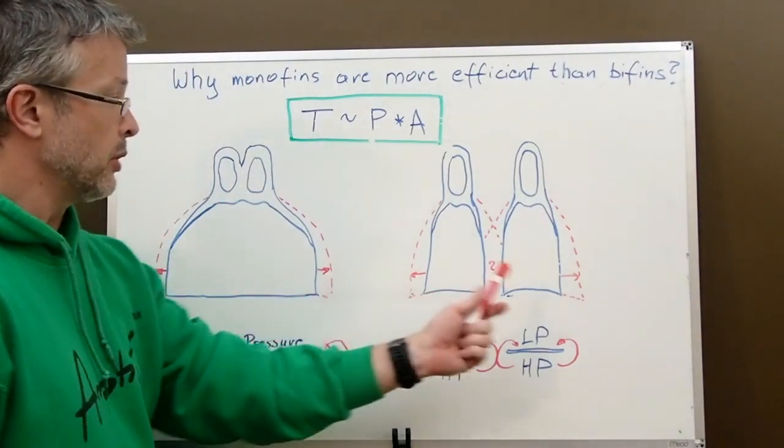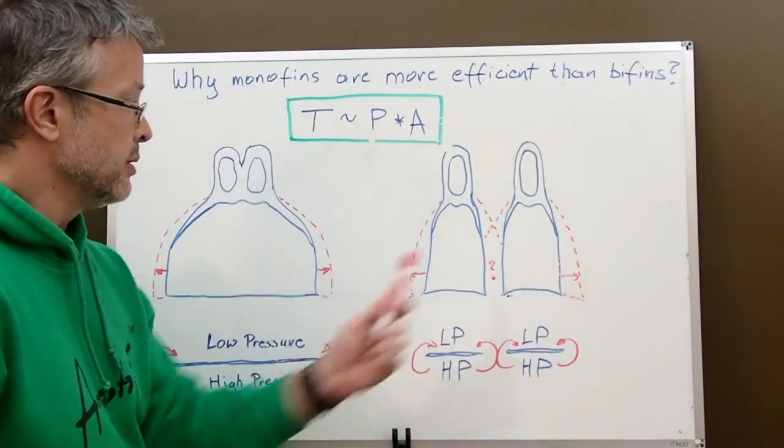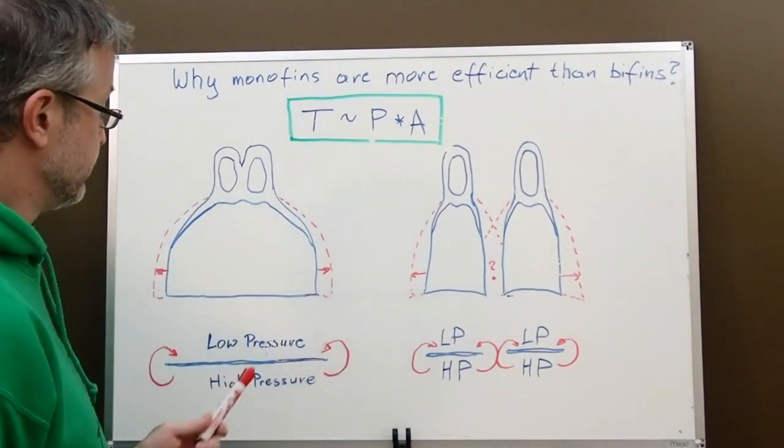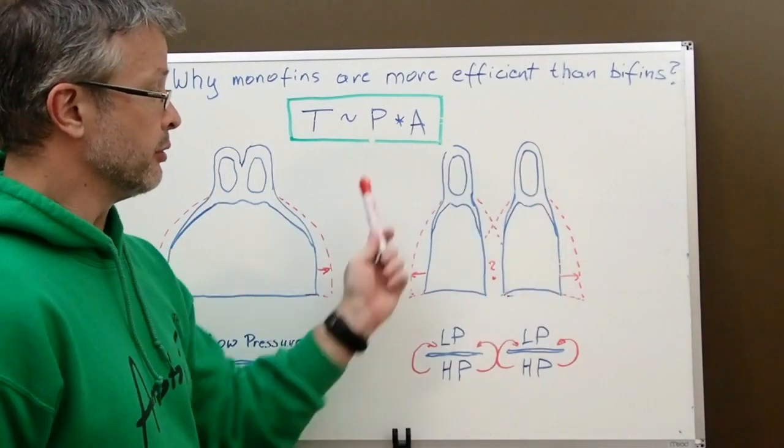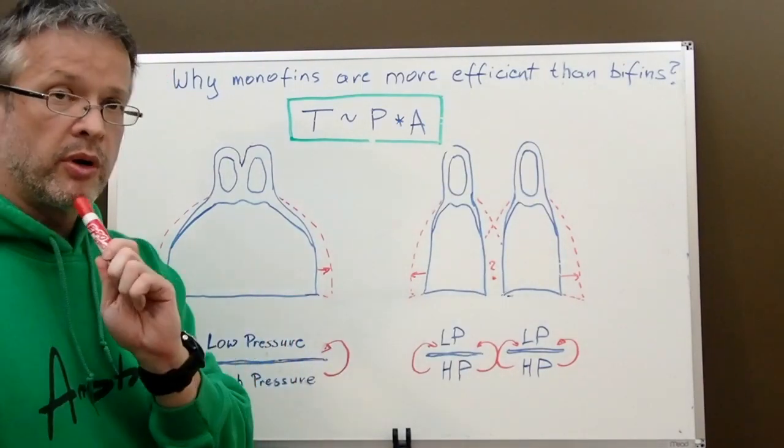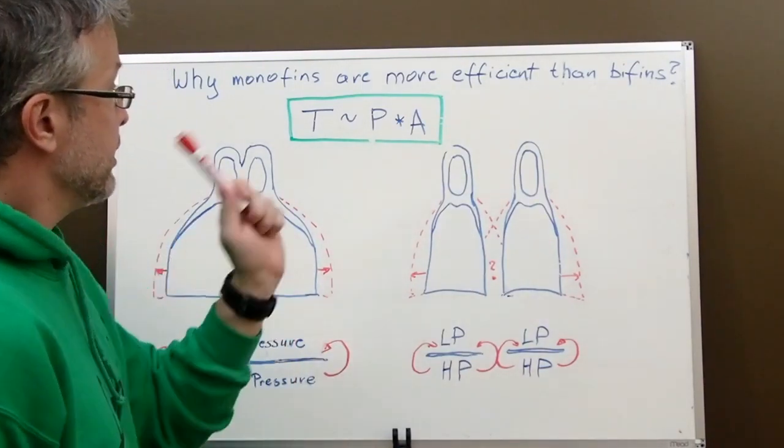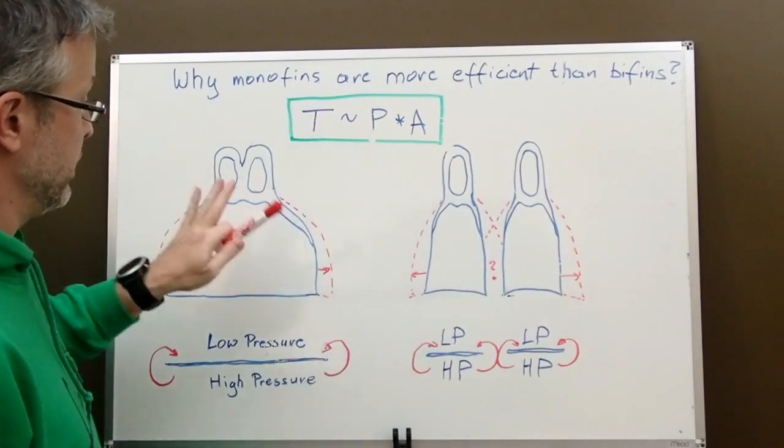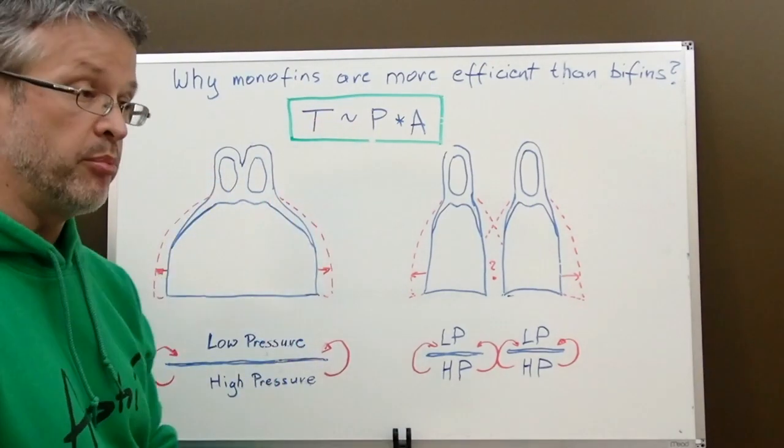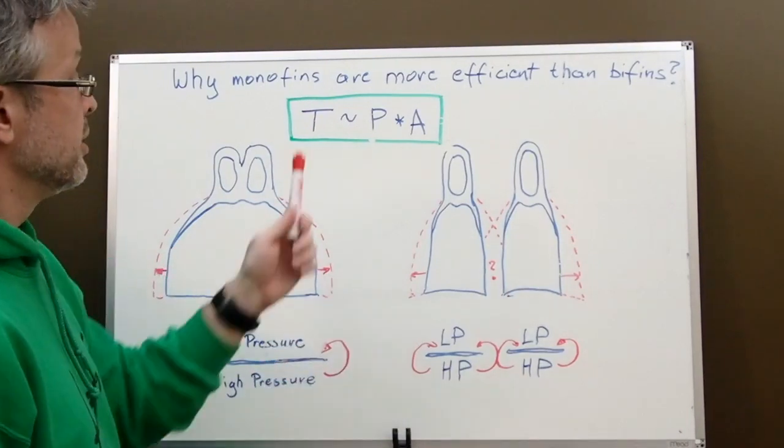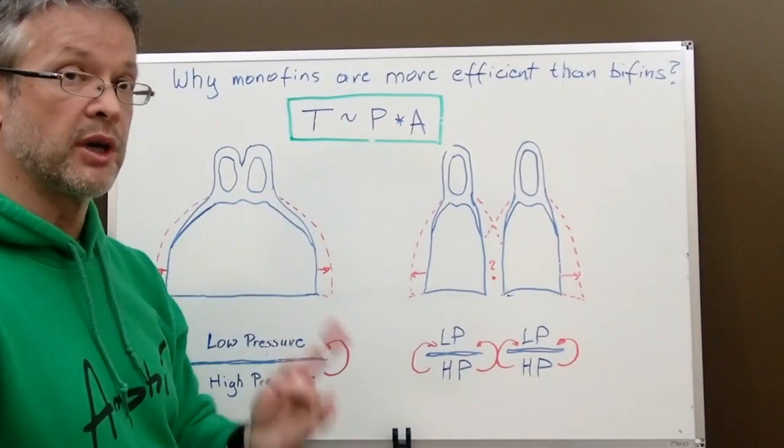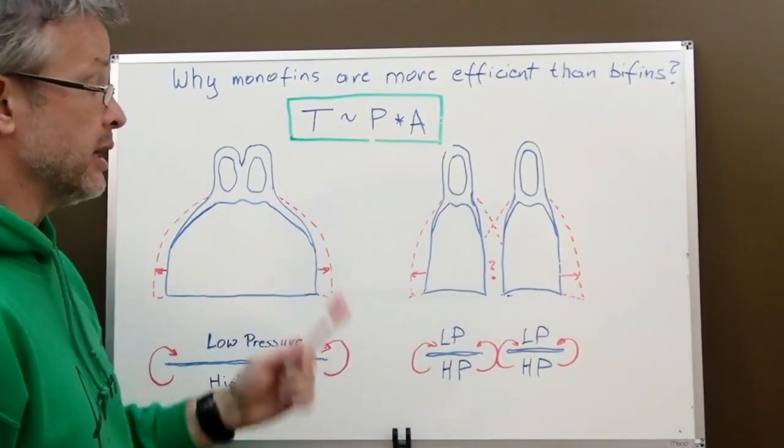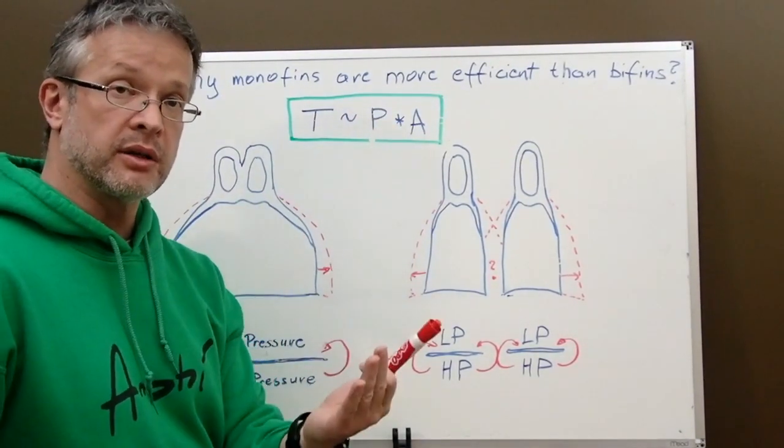So what we see on both sides of this whiteboard is monofin configuration and a bifin configuration. We remember from our previous video that the thrust is proportional to the pressure difference between the top side of the fin and the bottom side of the fin. So P is the pressure difference between the top side and the bottom side times area. Pressure times area is our force.